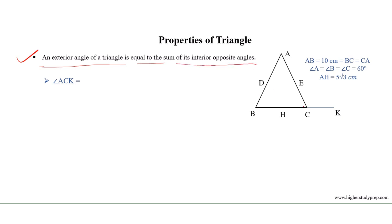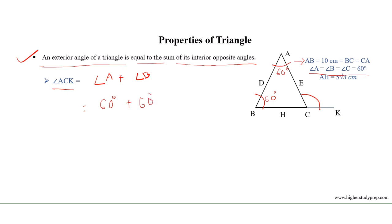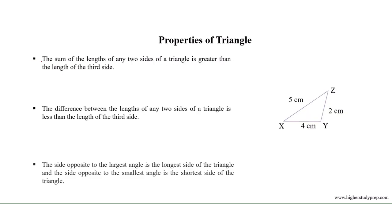An exterior angle of a triangle equals the sum of its two interior opposite angles. For example, in triangle ABC, angle ACK is an exterior angle, and with respect to angle ACK, angles A and B are the interior opposite angles. So angle ACK equals angle A plus angle B. Since triangle ABC is equilateral, all angles equal 60 degrees, so angle ACK equals 60 plus 60 equals 120 degrees.